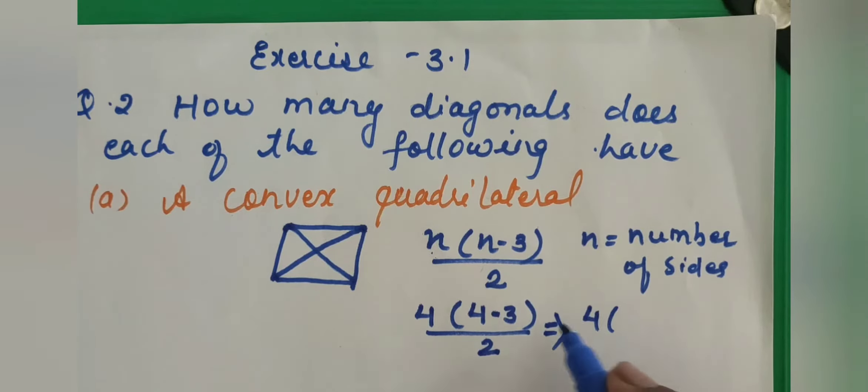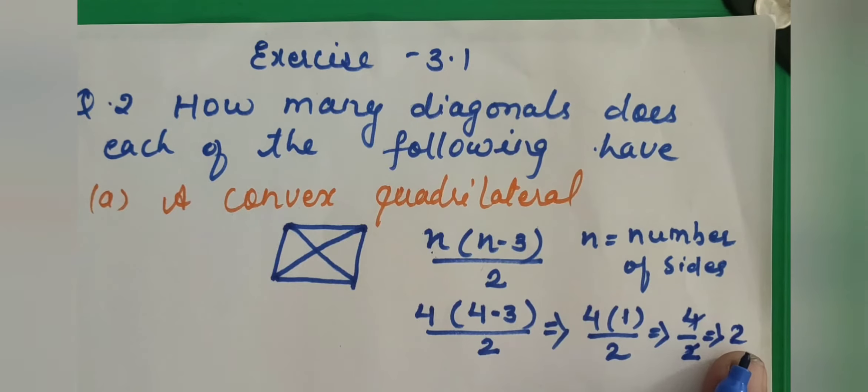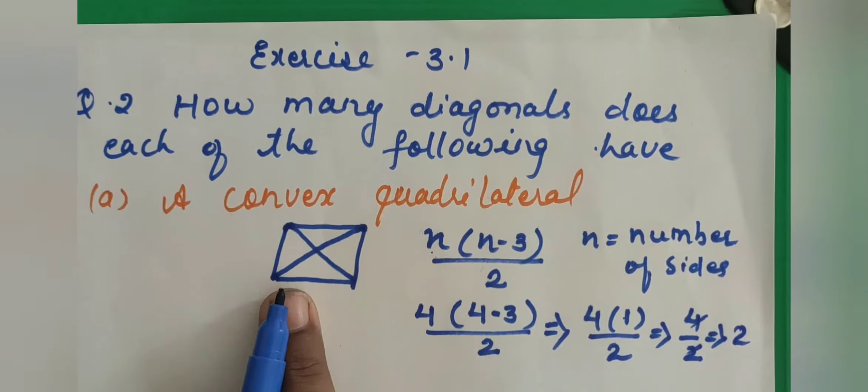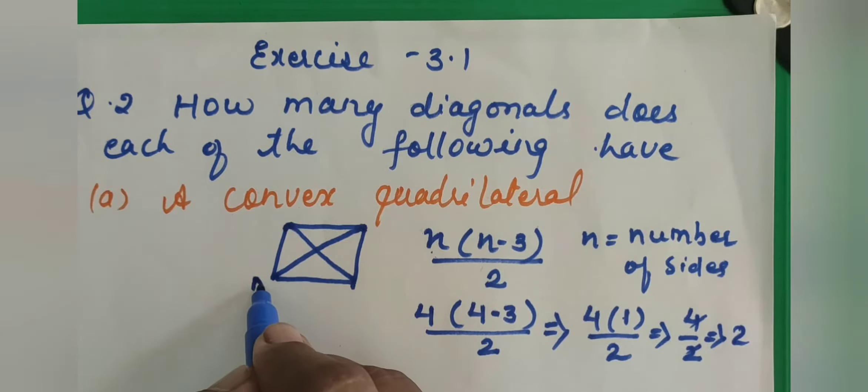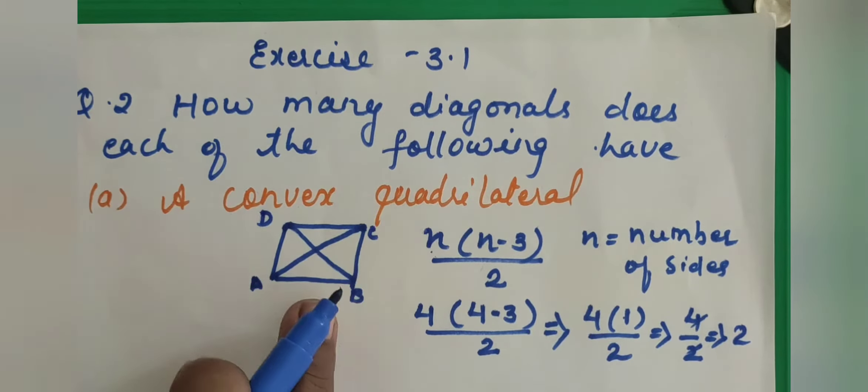Now in the next step, what we will do? 4 minus 3 means 1 upon 2. 4 into 1, 4 upon 2. Now after the cancellation, we will get 2. Means how many diagonals we got in a quadrilateral? There are 2 diagonals. Then I will name it. AC is a diagonal and BD is a diagonal.